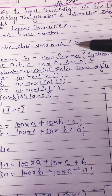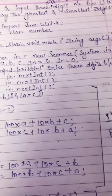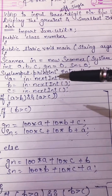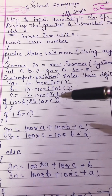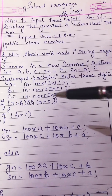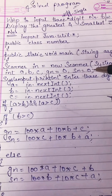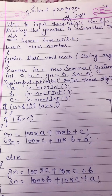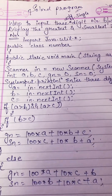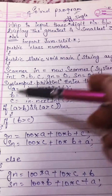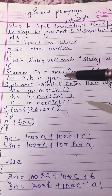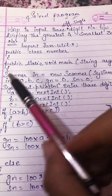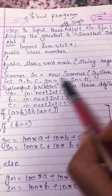Scanner in = new Scanner(System.in). We are using the Scanner class to take input of 3 numbers A, B, and C. In the next line, there is a declaration part of the variables A, B, C, and GN and SN for the resultant variables — GN for the greatest number and SN for the smallest number — and these are all of integer type.